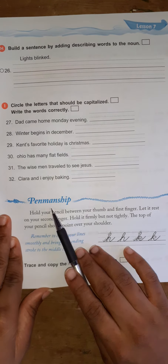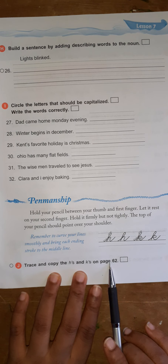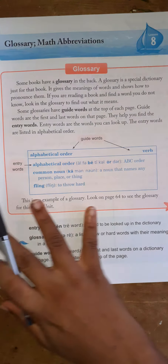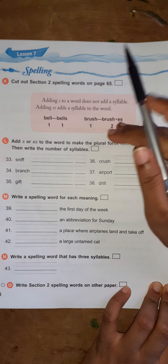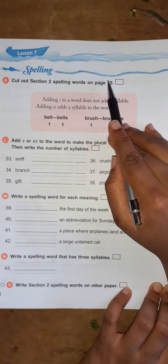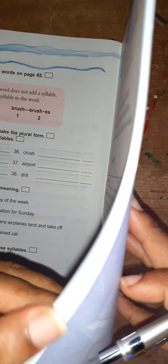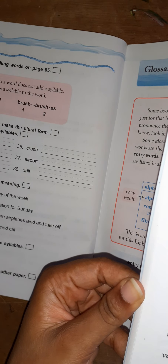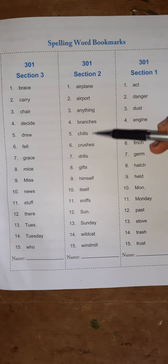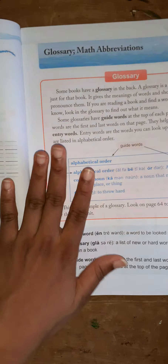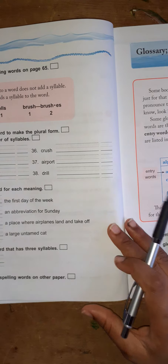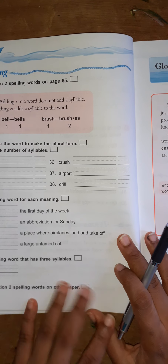Here you have penmanship — go to page 62 and do your penmanship. For spelling, go to page 65 and cut out your section 2 spelling words, just as you did for section 1. Put your name on it and keep it somewhere safe — in your unit folder or your spelling notebook.